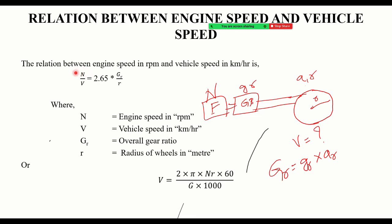You can find the vehicle speed for each gear. Given the engine speed, substitute the gear ratio for first gear to get vehicle speed in first gear, then second gear, then third gear, and so on. You can use either form of the formula — both are equivalent.